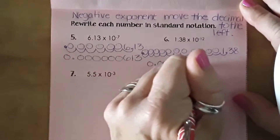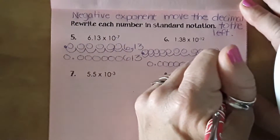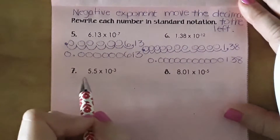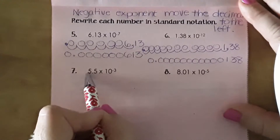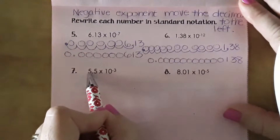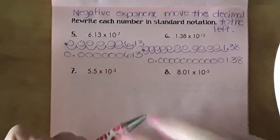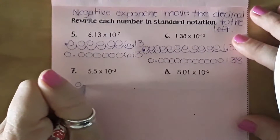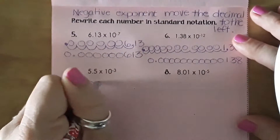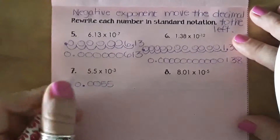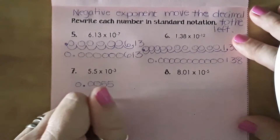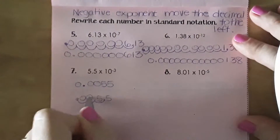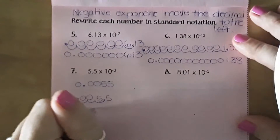For the next example, I already know I'm moving over one, so I can use a shortcut: three minus one gives me two, meaning I need two zeros in front of the five. I place my decimal, give myself two zeros, then place the five. To verify: moving it over one, two, three confirms the answer is 0.005.